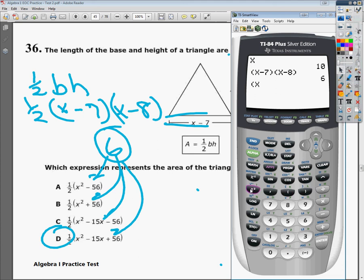So if I try the first one, x squared minus 56, it gives me 44. So obviously A is not the correct answer. So if I want to I can go ahead and mark it out.